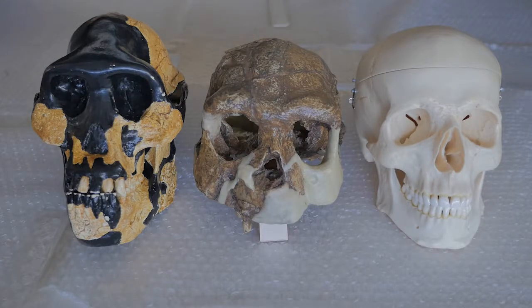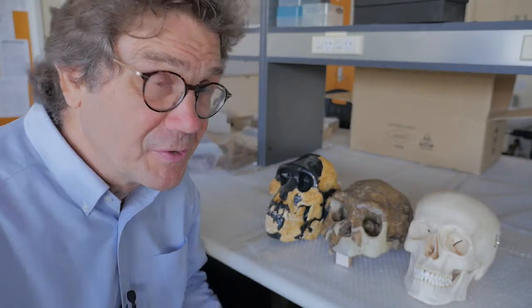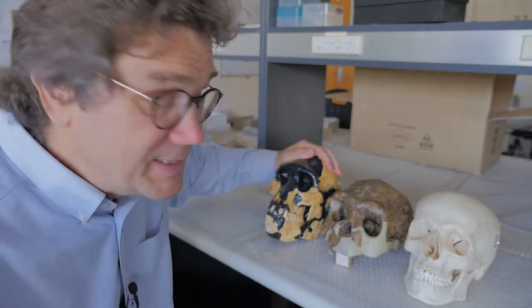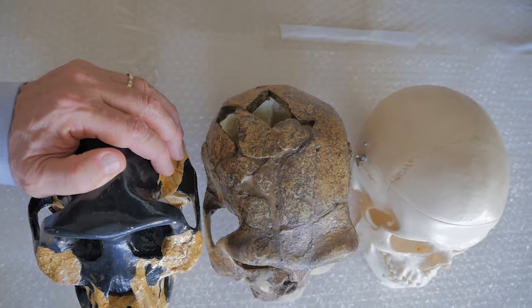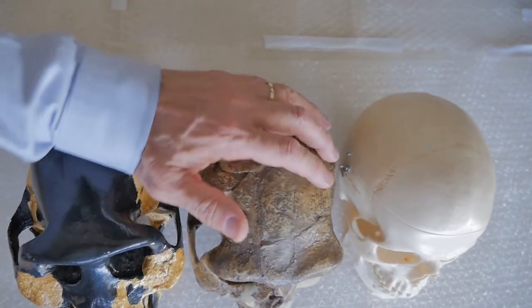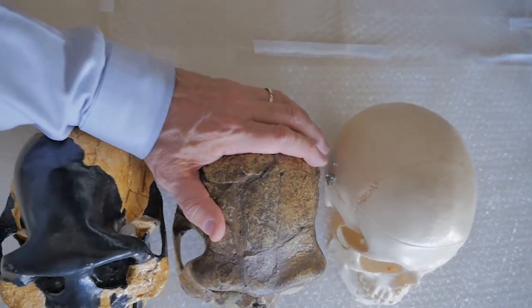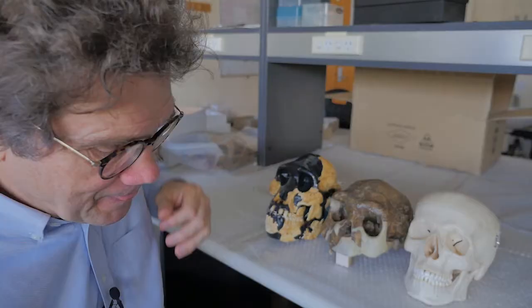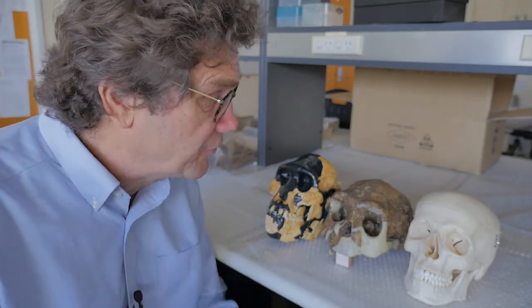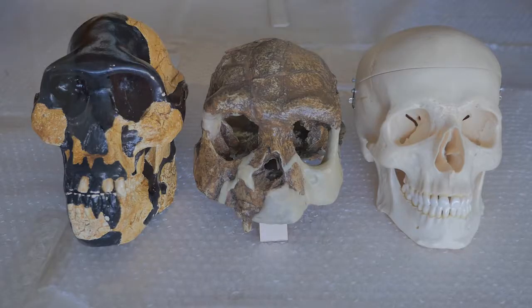We're looking here at about 4 million years of hominin evolution, from Australopithecines 3.5 million years ago, to Homo erectus about a million years ago, and then modern Homo sapiens, you and me. Our brains got bigger, increased by a factor of 3 or so. Why?